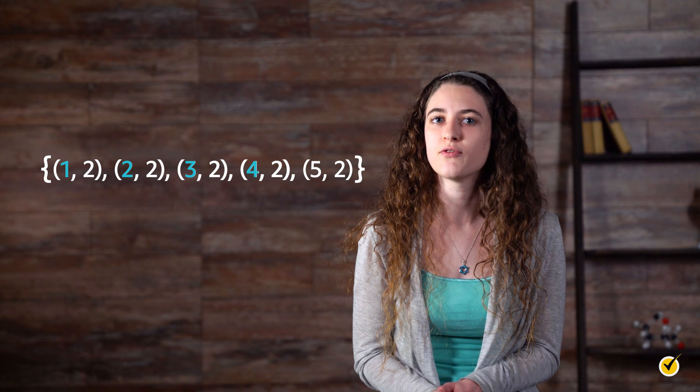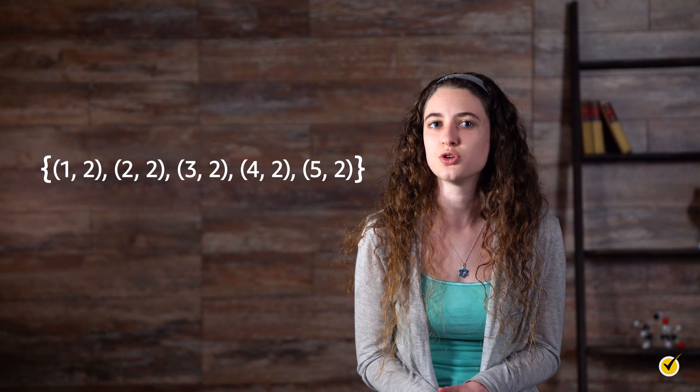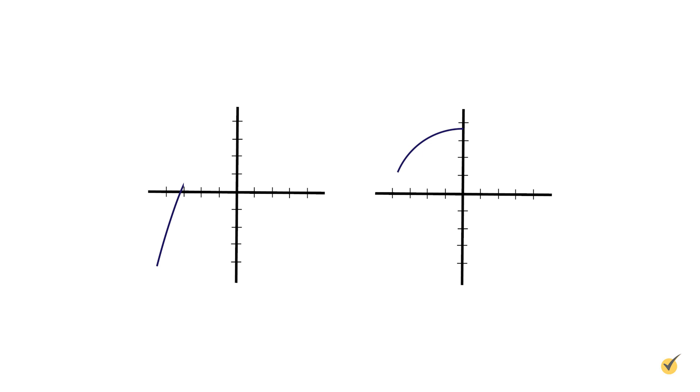Here's one more set to figure out: 1, 2; 2, 2; 3, 2; 4, 2; and 5, 2. What do you think? Is this a function or just a relation? The domain of this relation is 1, 2, 3, 4, and 5. And the range is 2. Because each element of the domain is paired with 2, it satisfies the definition of a function. It is allowable for each element of the domain to be paired with the same element of the range.